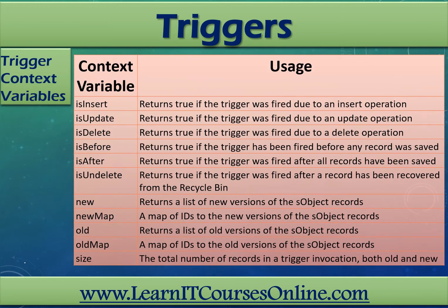Getting a little deeper into triggers, we get into trigger context variables. All triggers in Salesforce define implicit variables that enable developers to access the runtime context, so they don't need to define objects from their side. This table gives a list of context variables and their usages.